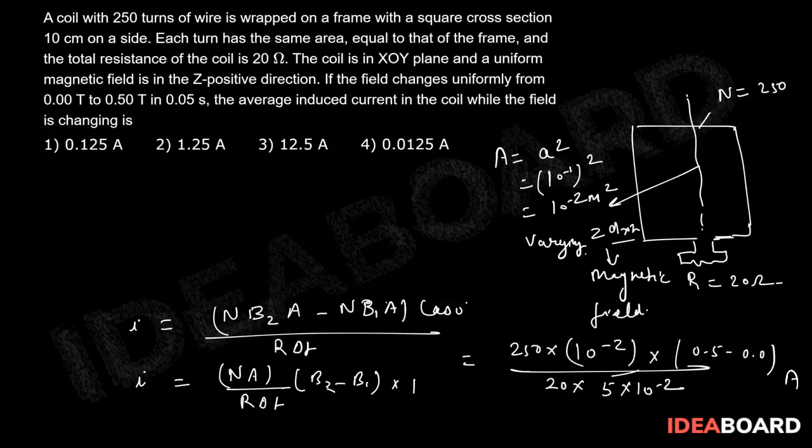So first of all this is 5, this will be 50, and this is cancelled out. This 10 to the power minus 2, 10 to the power minus 2 is cancelled out. So we get I will be equal...